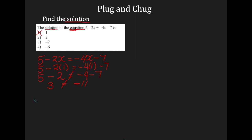I'm going to move on to number 2. I'll write my equation again: 5 minus 2x equals negative 4x minus 7. Wherever I see x, I replace it with 2. So this is 5 minus 2 times 2 equals negative 4 times 2, take away 7. This gives me 5 minus 4, which is 1. On the right-hand side, negative 4 times 2 is negative 8, take away 7, which gives me negative 15. So my answer is not 2.